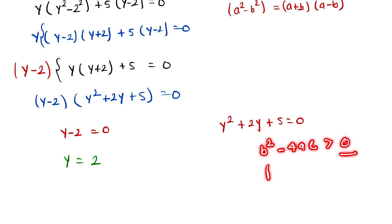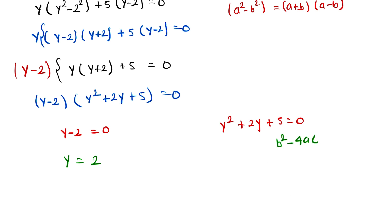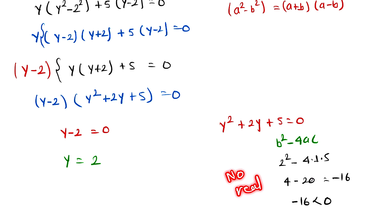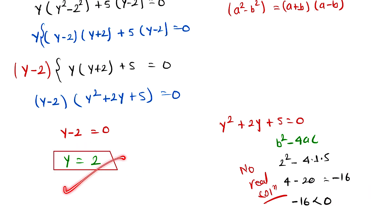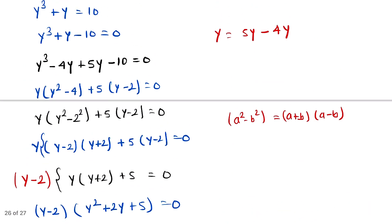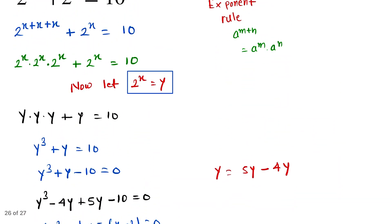For a real solution, the discriminant b² − 4ac must be greater than or equal to 0. Here, b² − 4ac = 2² − 4(1)(5) = 4 − 20 = −16, which is less than 0. So there is no real solution for the quadratic equation, and our answer is y = 2.